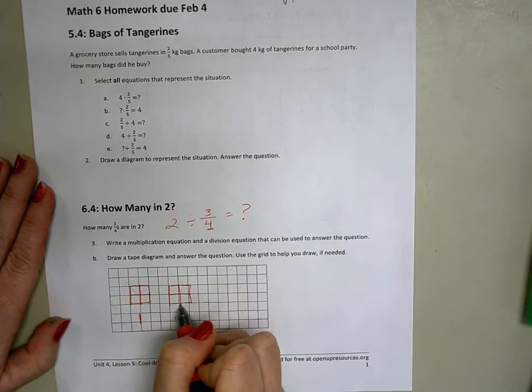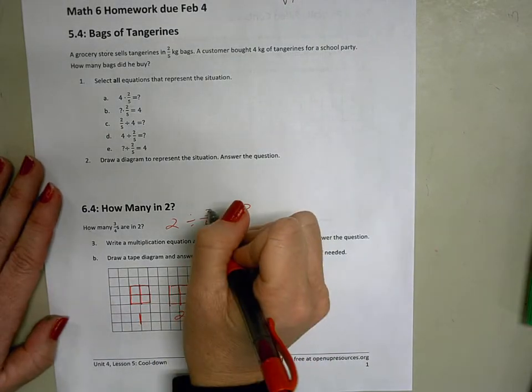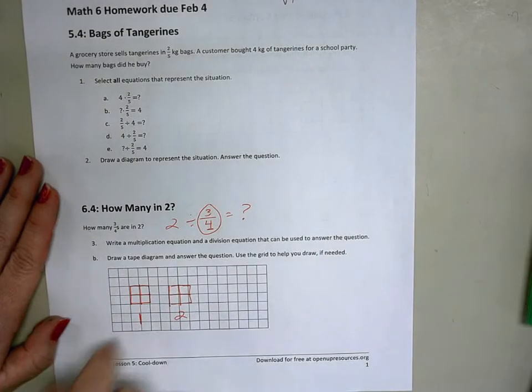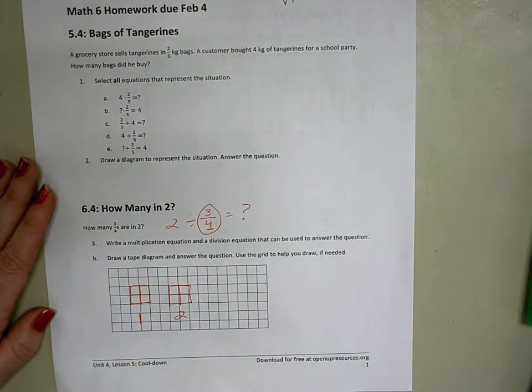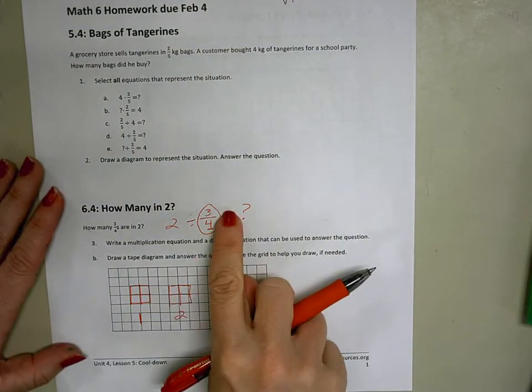And I'm cutting them into fourths. And then the question is saying how many groups of 3 fourths can we fit inside? So this is when we're going to start doing our counting. We're going to count by groups of 3.